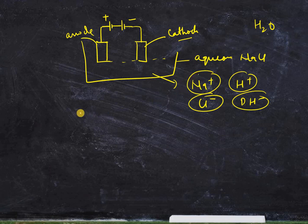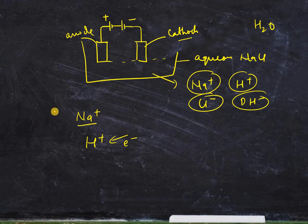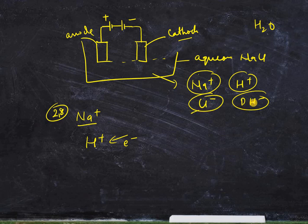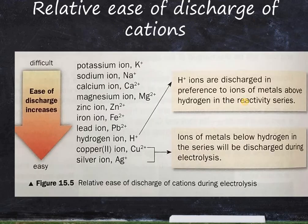Between sodium and hydrogen, we know sodium is very happy as a sodium ion — it is group one and already has a stable 2,8 electron structure, so it does not want to take electrons. Hydrogen, on the other hand, will take an electron very easily to become helium-like. So hydrogen will be discharged and become hydrogen gas. At the anode, between Cl- and OH-, the OH- is more easily discharged than chloride.